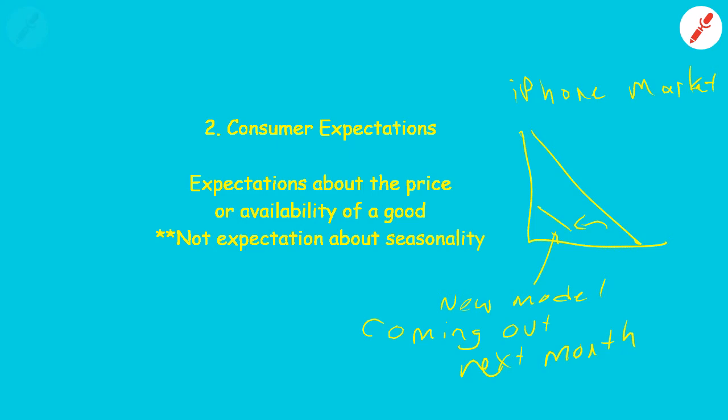Consumer expectations is only about the price or availability of a good. For instance, here I've drawn the market for iPhones. I remember over the summer I was thinking about buying an iPhone. I had a four-year-old dumb phone and I knew that the iPhone 5 was coming out in September. I was going to wait until the iPhone 5 came out because once the new iPhone came out I could get the next model up for free.